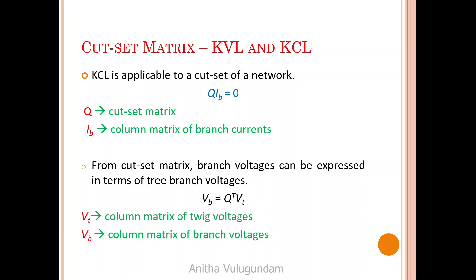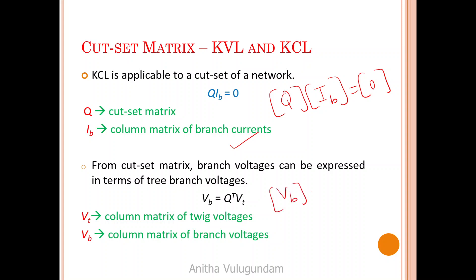The KCL equation is written as Q·IB = 0, where Q is the cut set matrix and IB is the column matrix of branch currents. The KVL equation is VB = Q^T · VT, where VB is the branch voltage column matrix, VT is the twig voltage column matrix, and Q^T is the transpose of the cut set matrix.